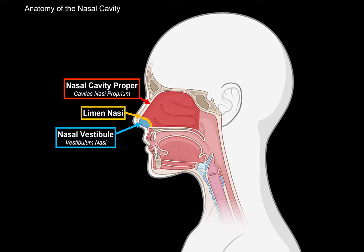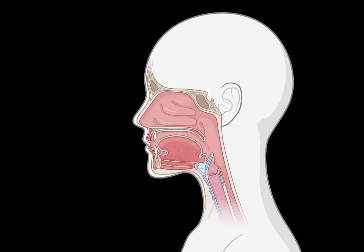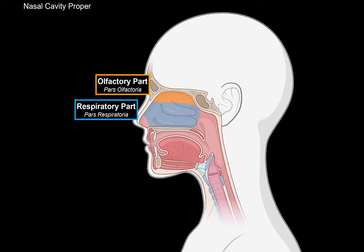The area just inside the nostrils — the nasal vestibule — is supported by the cartilage of the nose, and lined by tissue that contains hair. So the hair you see in your nostrils are only found in the nasal vestibule. The rest of the nasal cavity, which is the nasal cavity proper, doesn't have any hair — it's lined by mucosa. The nasal cavity proper is also divided into two parts, since their functions differ. We divide it into the olfactory part, for smell, and the respiratory part, for breathing.